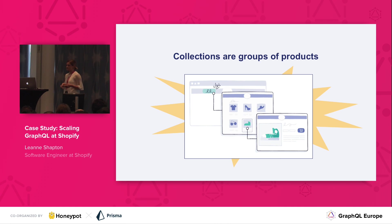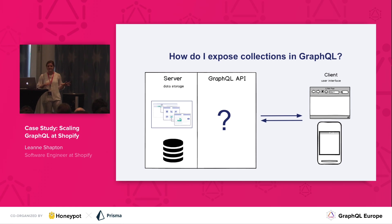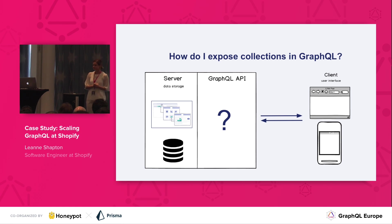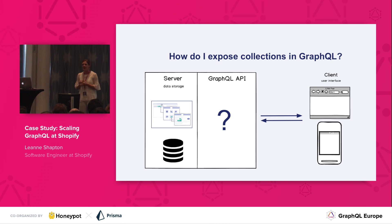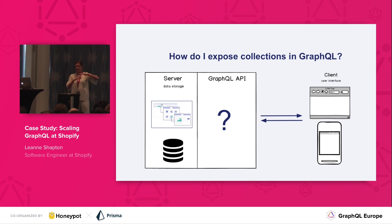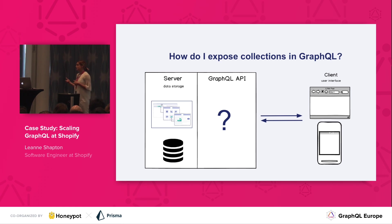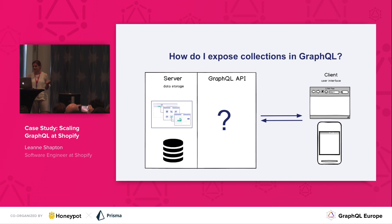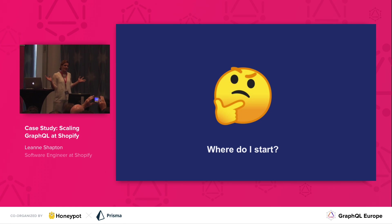Some attributes that collections have are title, image, and description. As the collection component team, we have successfully implemented this feature in Shopify's backend. It's also important to note our GraphQL APIs aren't built on top of our REST APIs — they are operating in parallel. So now we're in charge of exposing this collections feature through GraphQL. Where do we start?